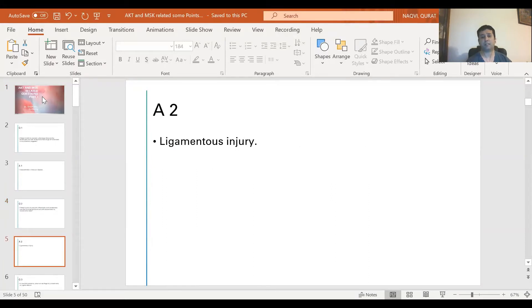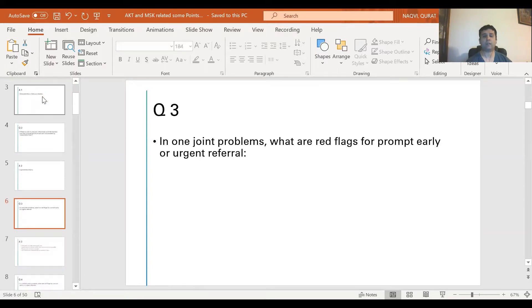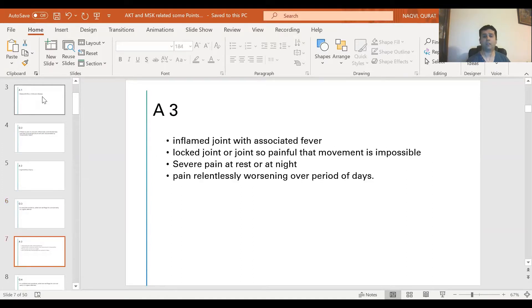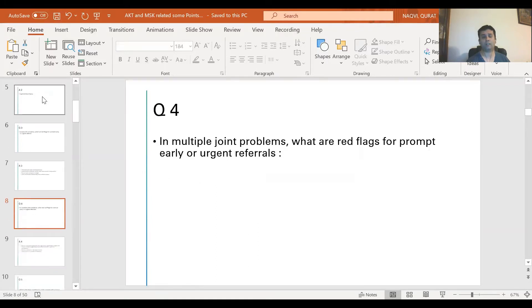Question 3: In one joint problems, what are the red flags for prompt, early, or urgent referral? The answer is inflamed joint with associated fever, a locked joint or joint so painful that movement is impossible, severe pain at rest or at night, pain relentlessly worsening over periods of days.